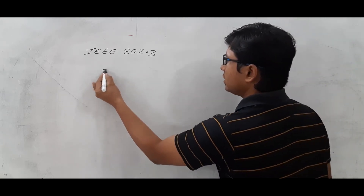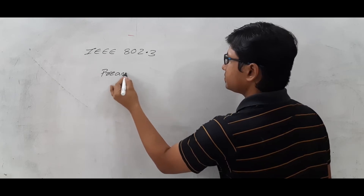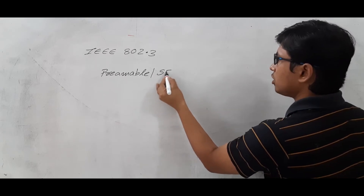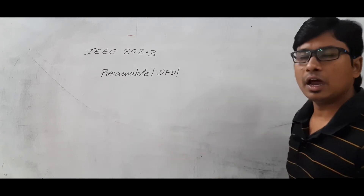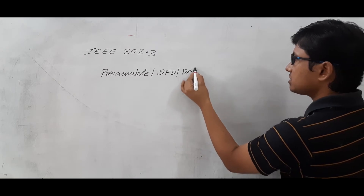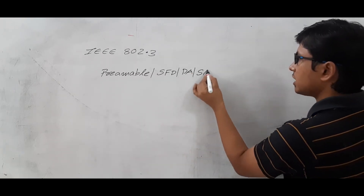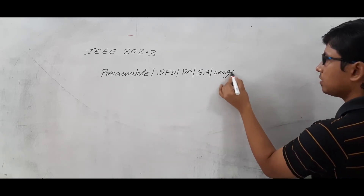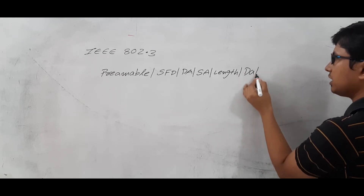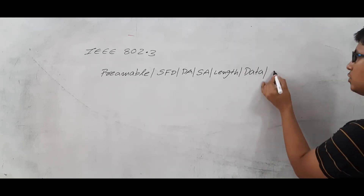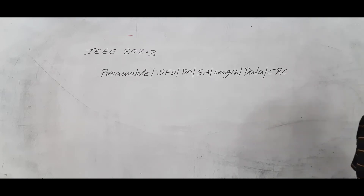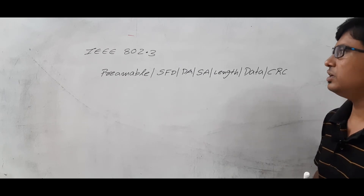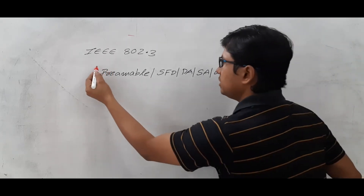We have a preamble. We have the start of the frame, or we call it as start frame delimiter. We have the destination address. We have the source address. We have the length of the frame. We have the actual data we want to send. And then you have the CRC, which we call cyclic redundancy check, for error detection. This is the frame format of the Ethernet.